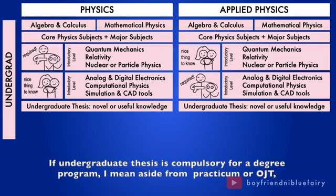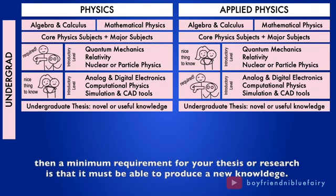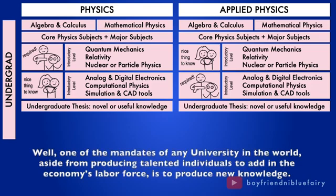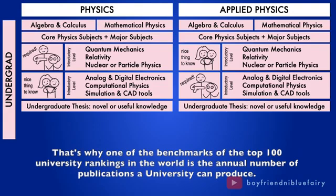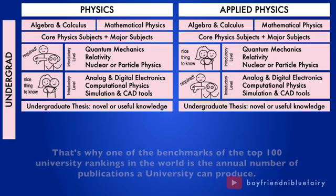If an undergraduate thesis is compulsory for a degree program, I mean aside from practicum or OJT, then a minimum requirement for your thesis or research is that it must be able to produce a new knowledge. Well, one of the mandates of any university in the world, aside from producing talented individuals to add in the economy's labor force, is to produce new knowledge. That's why one of the benchmarks of the top 100 university rankings in the world is the annual number of publications a university can produce.